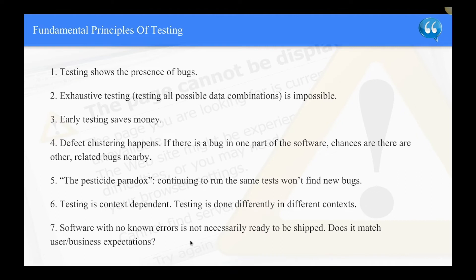Number five: the pesticide paradox — continuing to run the same tests won't find new bugs; just repeating the same tests over and over doesn't mean you'll fix bugs. Number six: testing is context dependent — you need to base your testing on something, such as requirements or a story, to carry out your tests. Number seven: software with no errors is not necessarily going to be shipped — does it match user or business expectations? Not having errors doesn't mean it's ready.